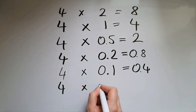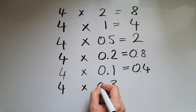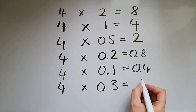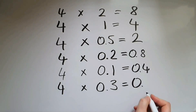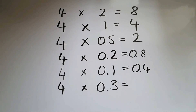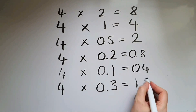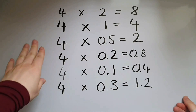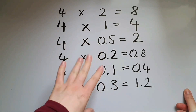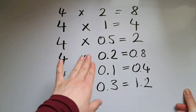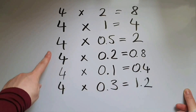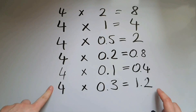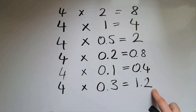If I multiply 4 by 0.3, that's equal to 30% of 4, so that's going to give me 1.2. When multiplying a whole number by a decimal that is between 0 and 1, the number is going to get smaller — just like we've seen: it's going from 4 to 2, from 4 to 0.8, 4 to 0.4, 4 to 1.2.